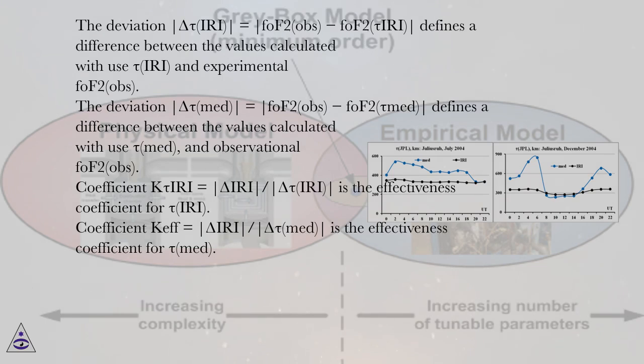The deviation delta tau MED equals vertical bar FOF2 OBS minus FOF2 tau MED defines a difference between the values calculated with use tau MED and observational FOF2 OBS.